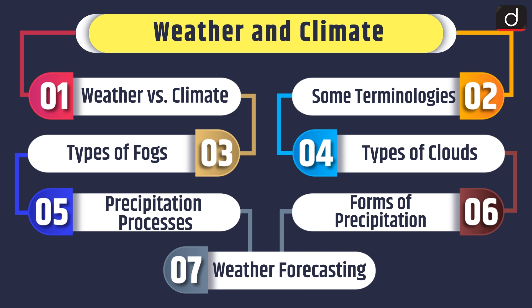First of all, we will discuss weather versus climate. Then we will have a look at some terminologies, types of fogs, and types of clouds. Then we will discuss precipitation processes, forms of precipitation, and lastly weather forecasting.